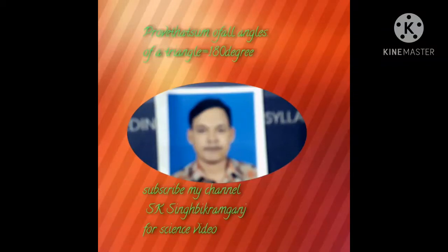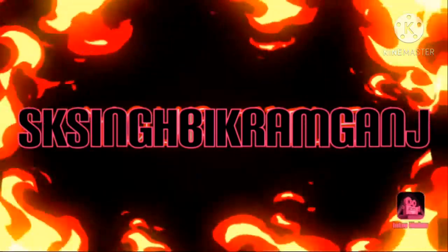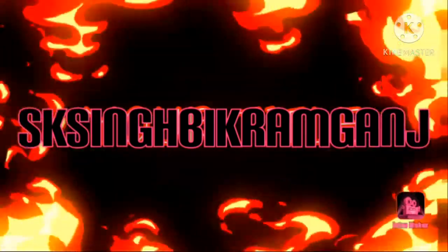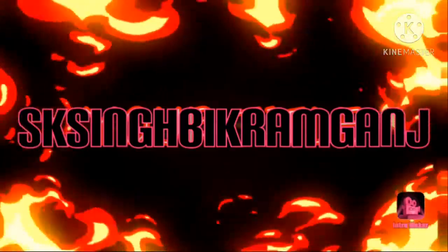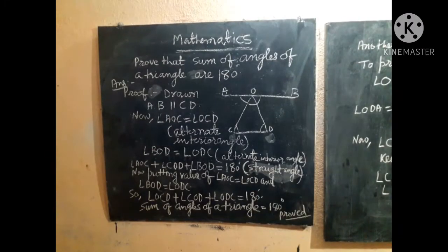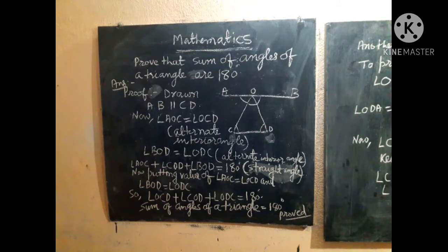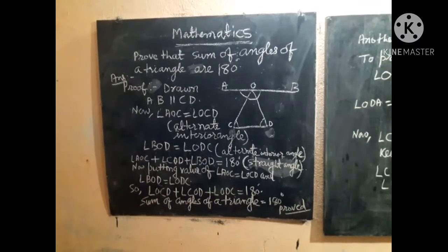Prove that the sum of all angles of a triangle is 180 degrees. Today we are going to make a video of mathematics in which we want to show that the sum of all angles of a triangle is 180 degrees.